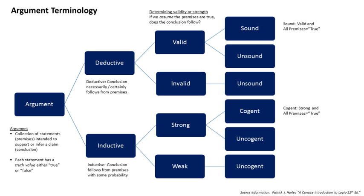If an argument is valid, it is a valid deduction, and if its premises are true, the conclusion must be true — a valid argument cannot have true premises and a false conclusion. An argument is formally valid if and only if the denial of the conclusion is incompatible with accepting all the premises. The validity of an argument depends, however, not on the actual truth or falsity of its premises and conclusion, but solely on whether or not the argument has a valid logical form.